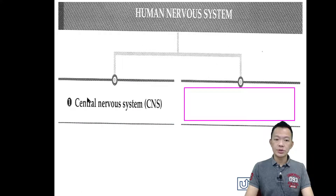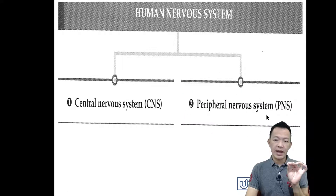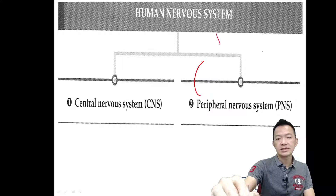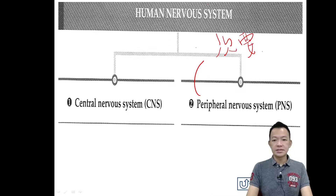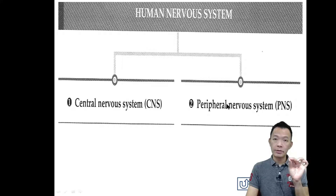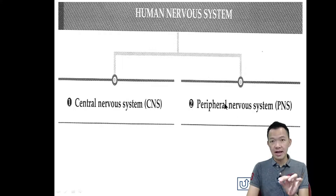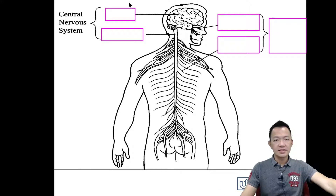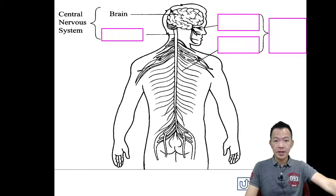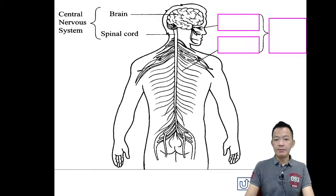Number one is the Central Nervous System — 中央神经系统. Number two is the Peripheral Nervous System. 'Peripheral' in Chinese means secondary, not the most important — like supporting characters in Cantonese we call 'carafer,' as opposed to the main lead. So peripheral means not the most important. These are the two major nervous systems.